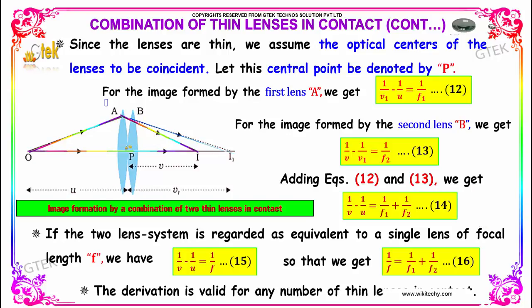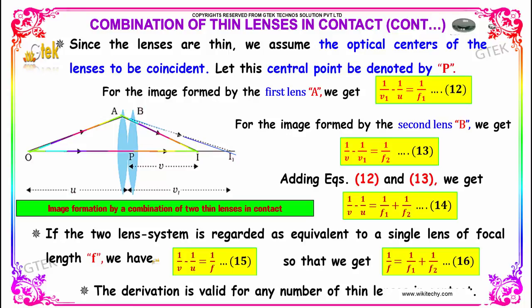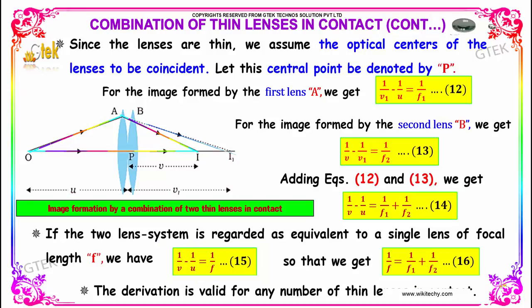If the two lens system is regarded as equivalent to a single lens of focal length F, we have 1/V − 1/U = 1/F. So that we get 1/F = 1/F1 + 1/F2, marked as equation 16.